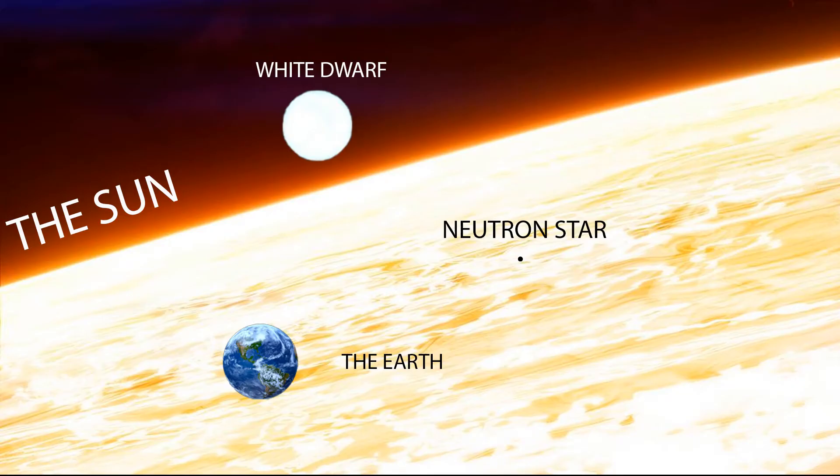The density of neutron stars is so incredibly high that if our Sun were compressed to the same density it would have a radius of only 20 kilometers. Hence neutron stars are the smallest and densest stars in existence.